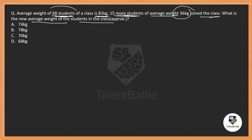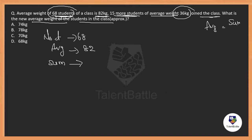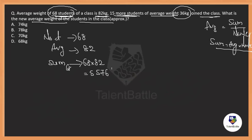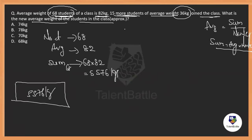There is a group of 68 students. The number of students at first is 68 and the average of them is 82. Average is nothing but sum divided by number of people, so sum will be equal to average into number. Sum of all the 68 people will be 68 into 82, which is 5576.